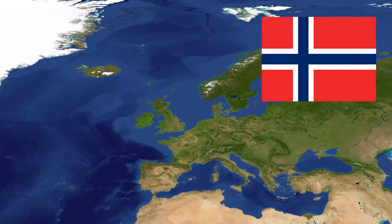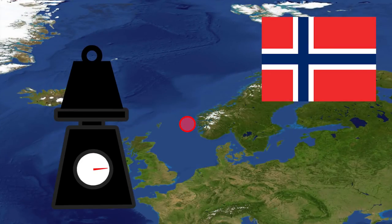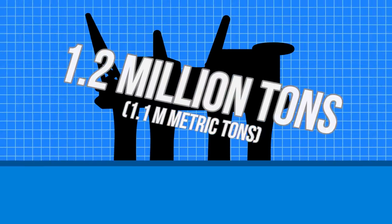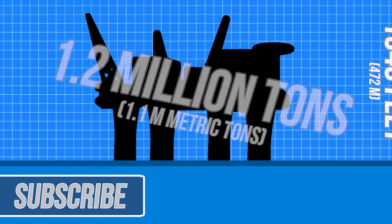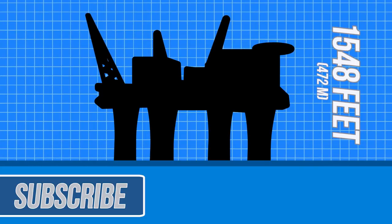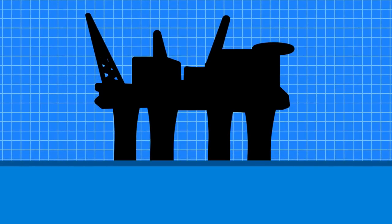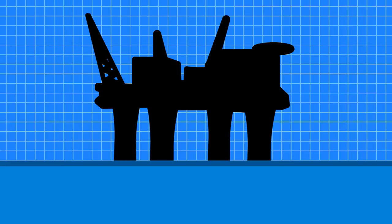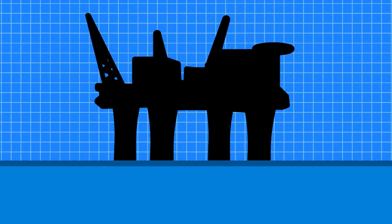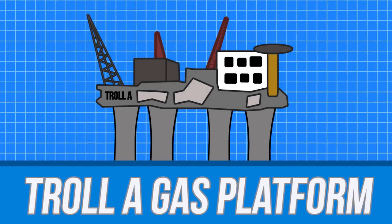Just off the west coast of Norway sits the tallest and heaviest object that mankind has ever moved. It weighs 1.2 million tons and stands 1,548 feet high, and it's one of the most complex engineering projects in all of history. This object is known as the Troll A gas platform.